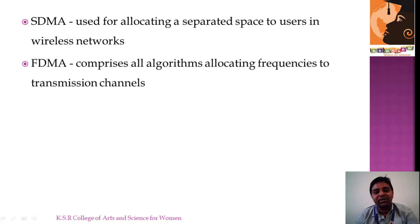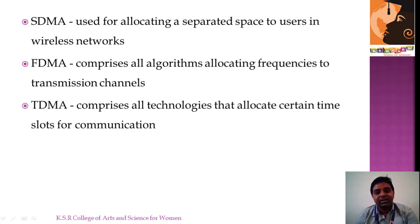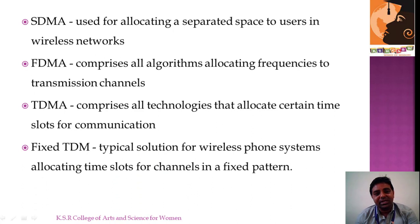FDMA allocates frequencies on a separate basis. In TDMA, time is divided into certain slots and allocated for different users. Fixed TDM, used mainly in wireless phone systems, uses allocation for time slots in a fixed pattern.